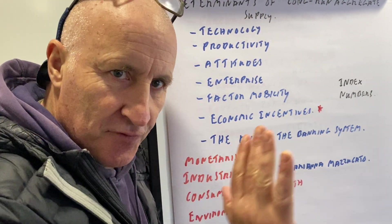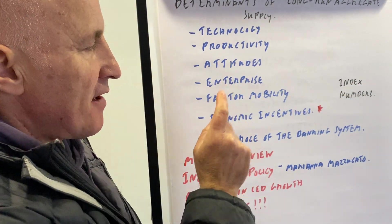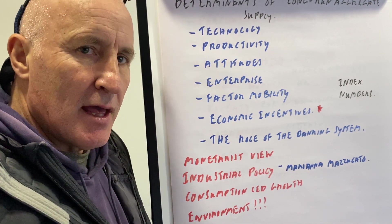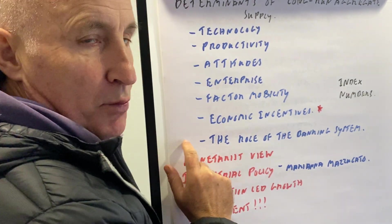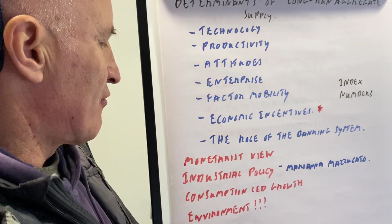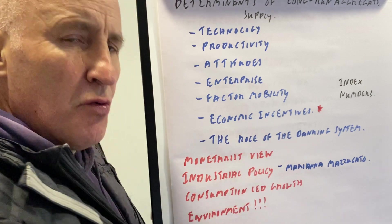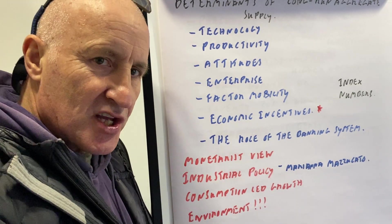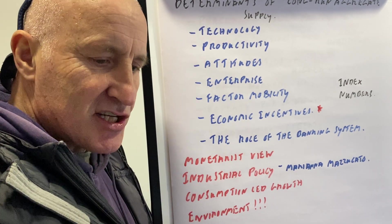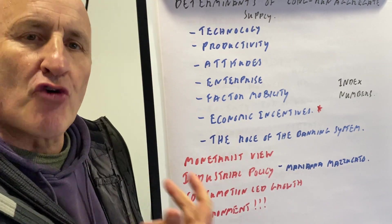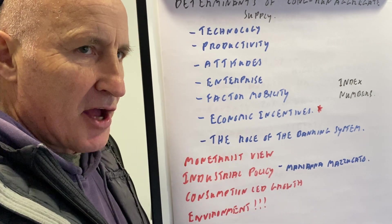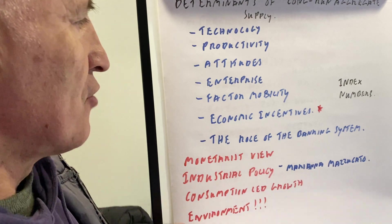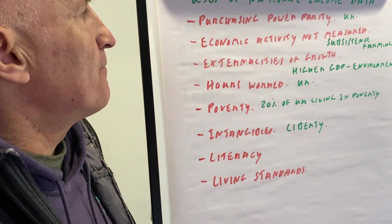Determinants of long-run aggregate supply: technology, productivity, attitudes, enterprise, factor mobility, economic incentives, and the role of the banking system. If banks don't lend to firms in the real economy, the economy suffers. All these factors shift out the long-run aggregate supply curve. The syllabus also includes industrial strategy — Mariana Mazzucato's argument — which is about providing grants to businesses, giving advice, setting a general direction, and creating markets. For example, the government should have created the green technology market to address climate change and become a market leader through public-private collaboration.